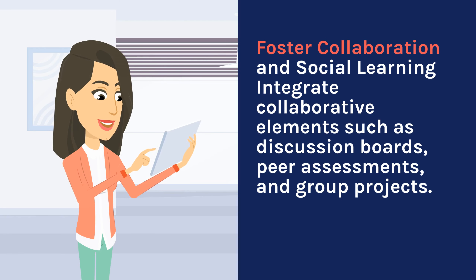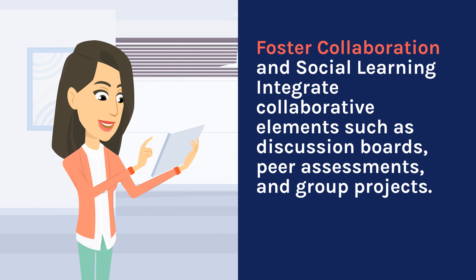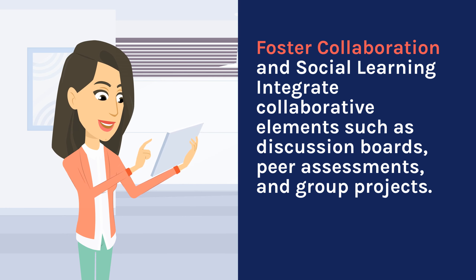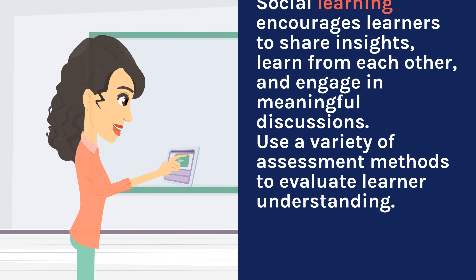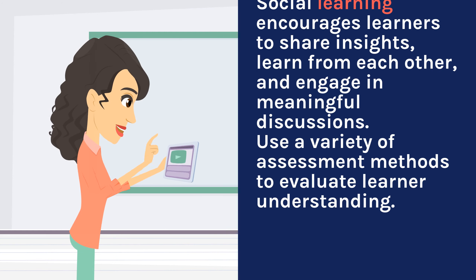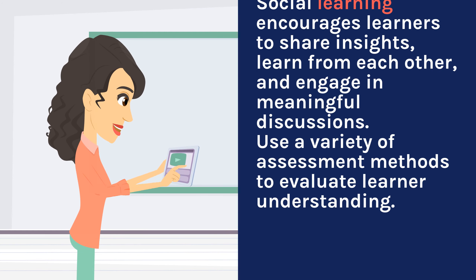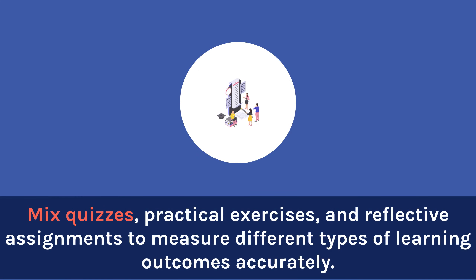Tip 9: Foster collaboration and social learning. Integrate collaborative elements such as discussion boards, peer assessments, and group projects. Social learning encourages learners to share insights, learn from each other, and engage in meaningful discussions. Tip 10: Use a variety of assessment methods to evaluate learner understanding. Mix quizzes, practical exercises, and reflective assignments to measure different types of learning outcomes accurately.